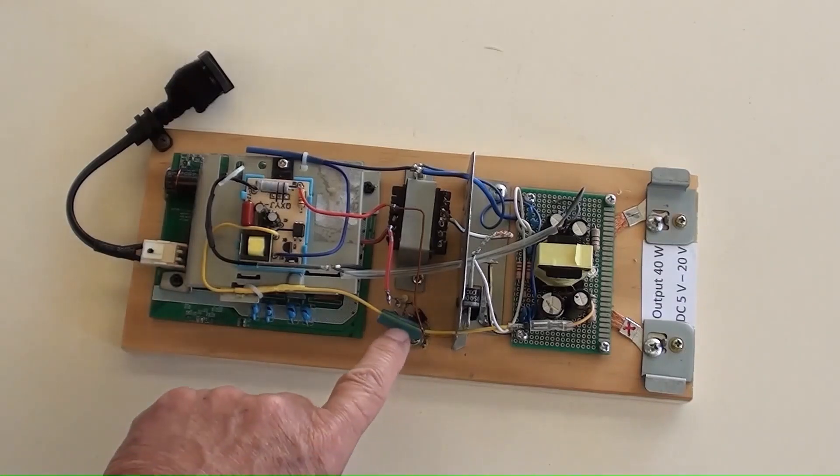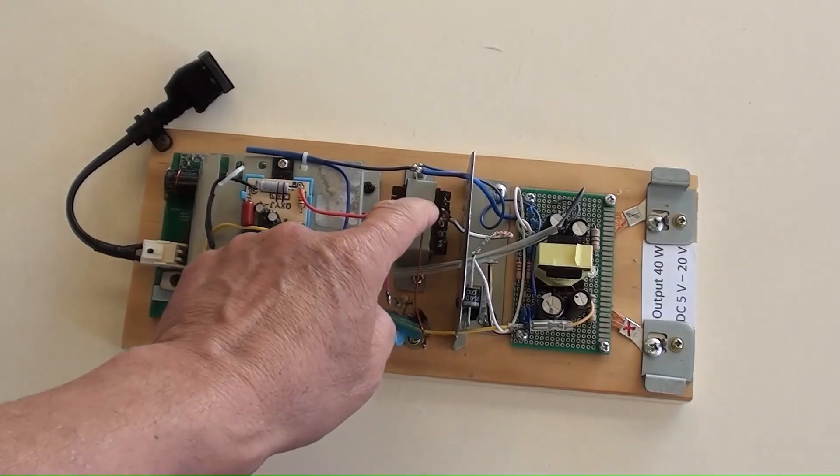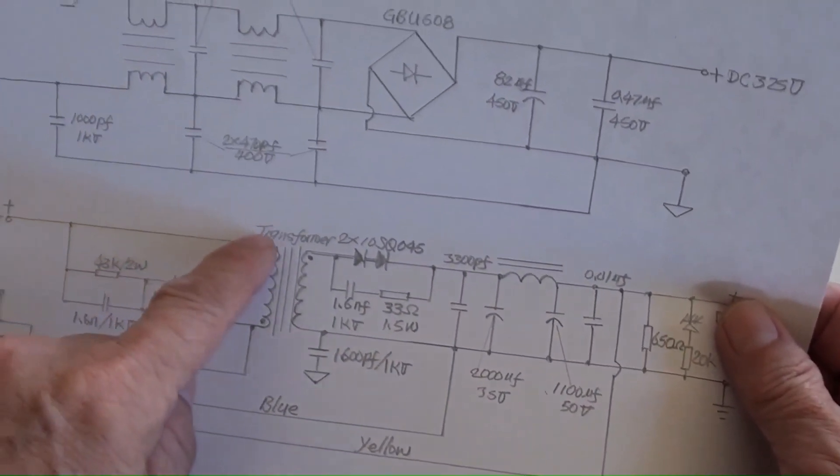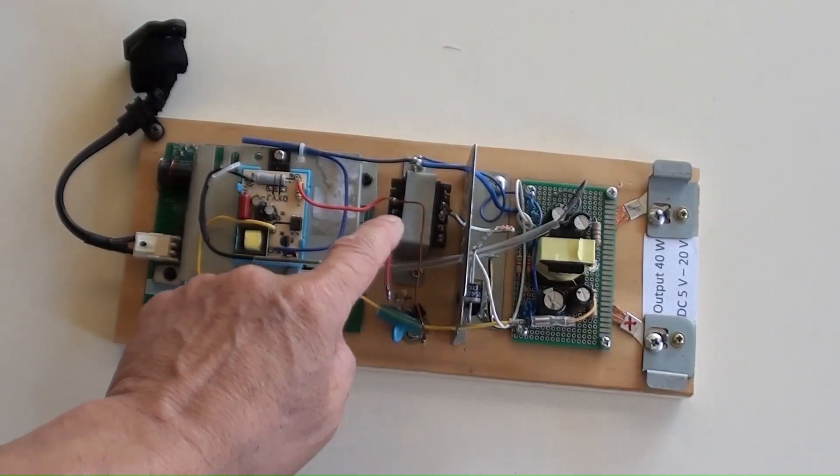This is the components for the snub circuit. And that is the ferrite transformer. The DC 325 volt is connected to this terminal on the transformer.